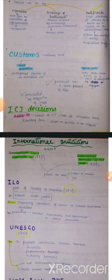State practice means widespread repetition of an intentional act by a state — hum ek particular cheez karte aa rahe hain consistently. Opinio juris, matlab kya hai? These are acts that must occur as a sense of legal obligation.